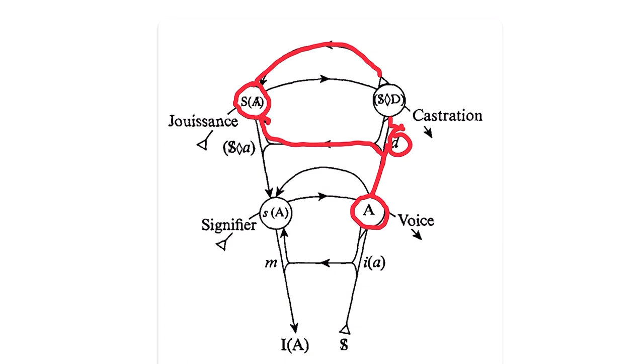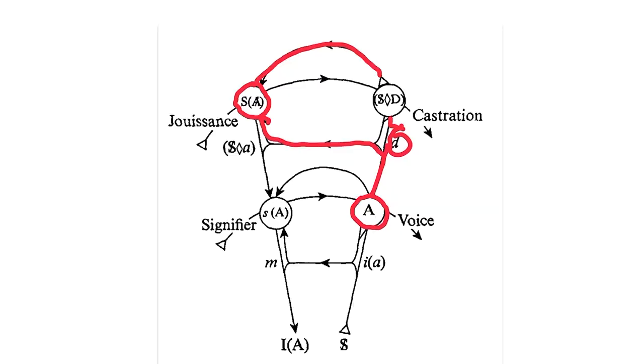Lacan also calls the symbolic phallus the signifier that represents the signifier's relation to the signified. So what does that mean? Well, I think it means that every particular attempt at seeking out a meaning for one's desire, every desired object, will forever be marked with this incompleteness.